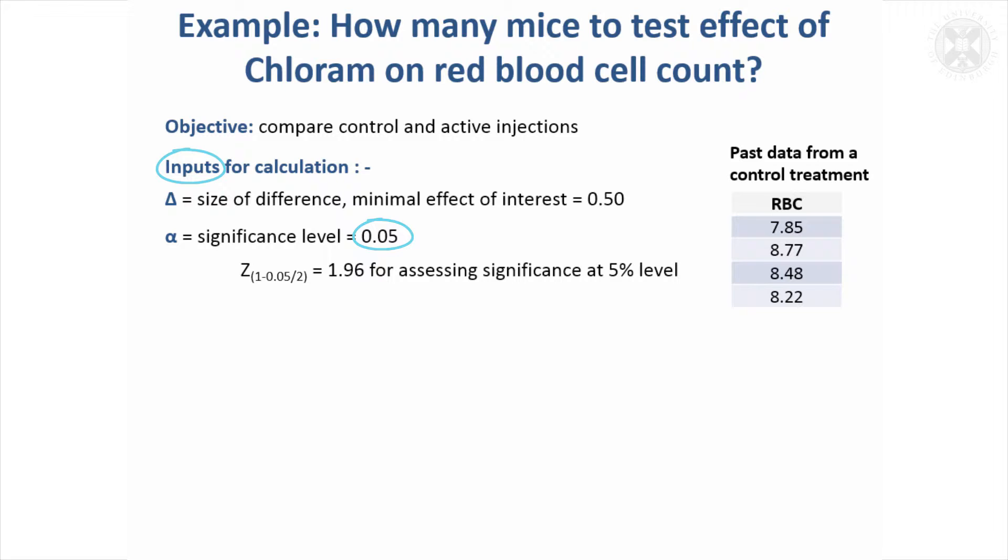We'll allow for a two-way analysis—it could go in either direction. We use Z equals 1.96. We'll use the minimum power that's considered acceptable, so that's 80% power. Z is going to be 0.84 for that.